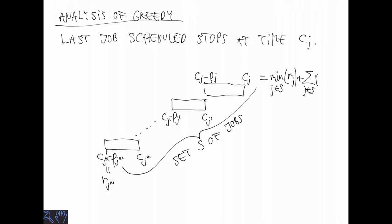So let's call this set of jobs s. Then we can write cj as the minimum release time in this set plus the sum of all the processing times in s.